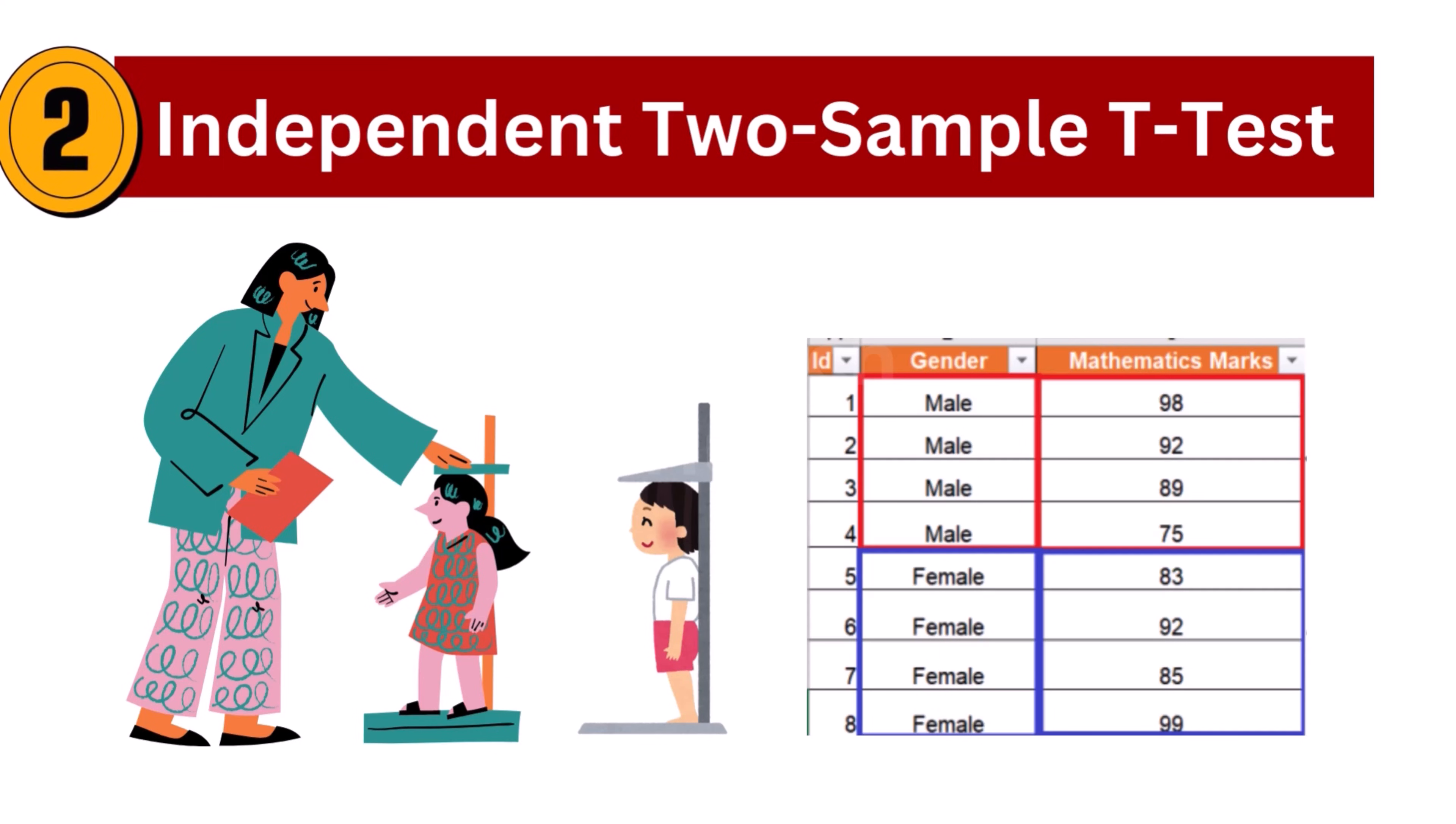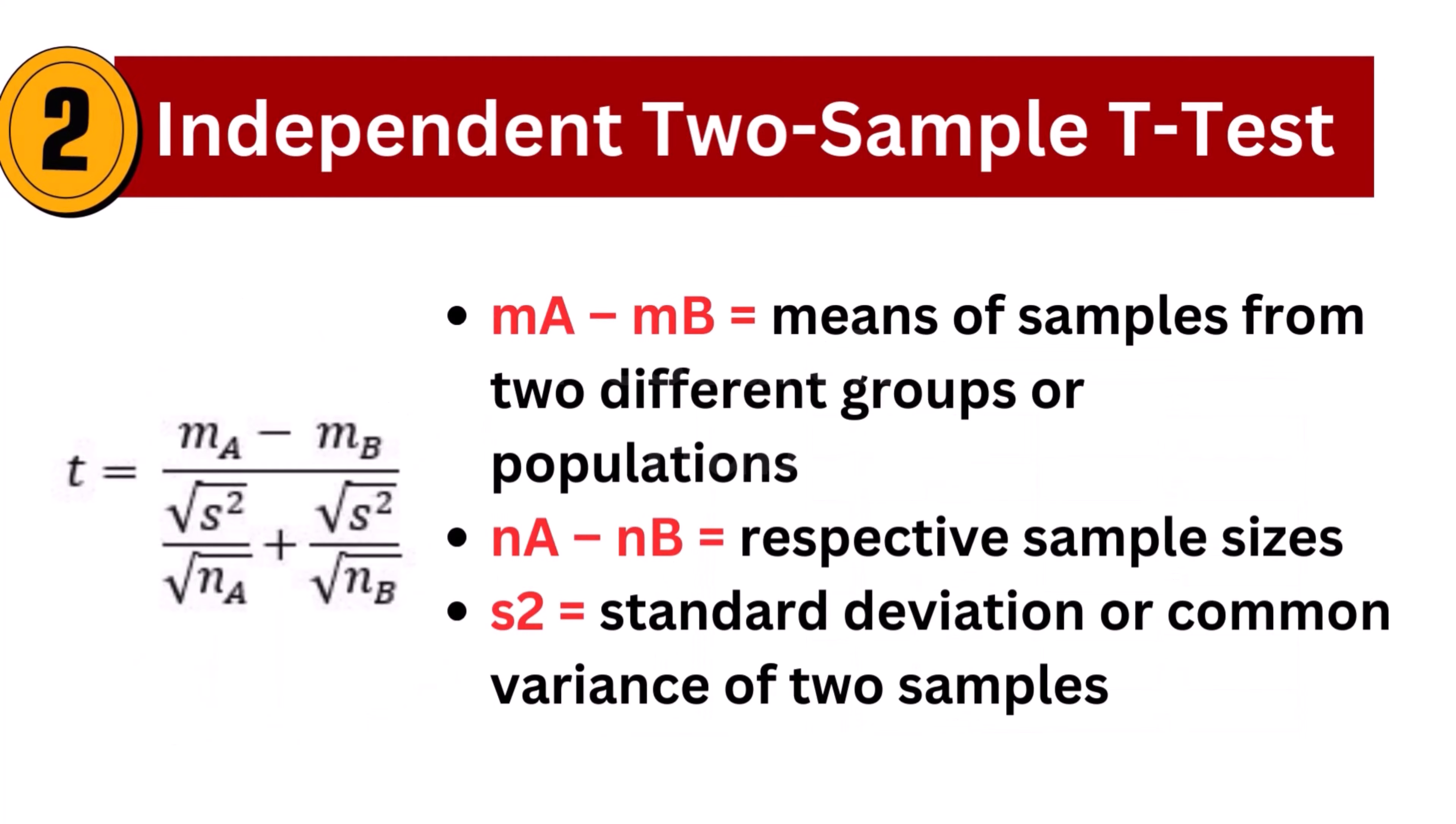The t-test formula used to calculate this is the need to compare the means of height between two independent groups, male and female. Independent samples t-test could be performed.